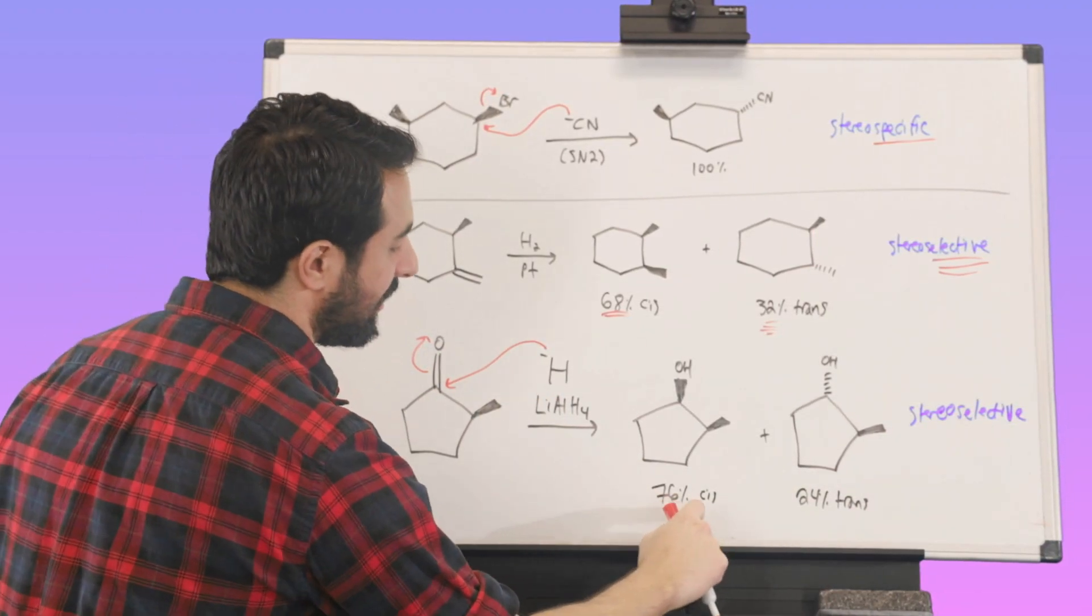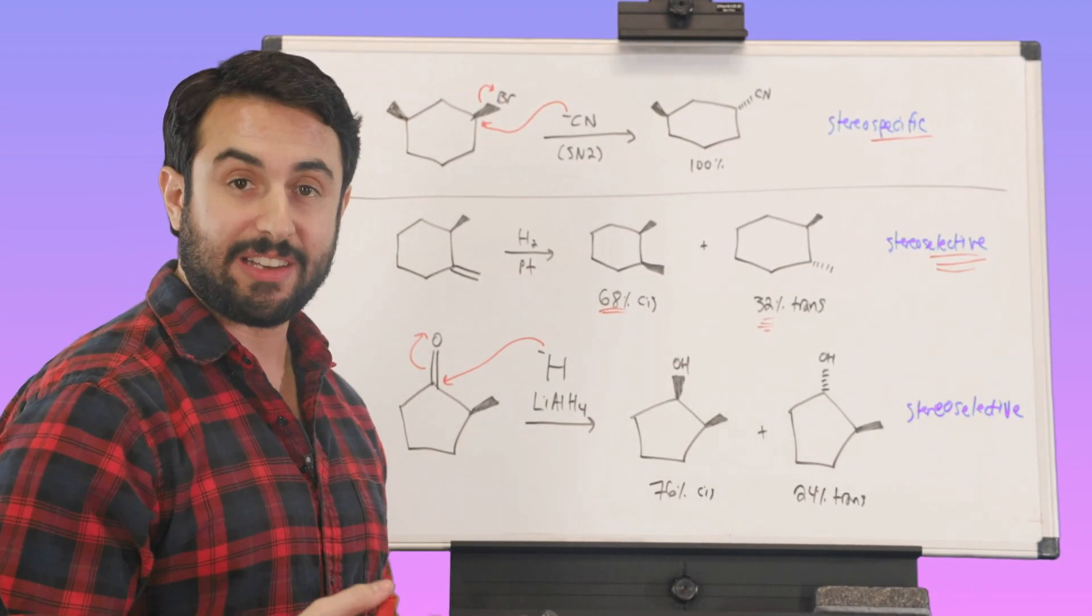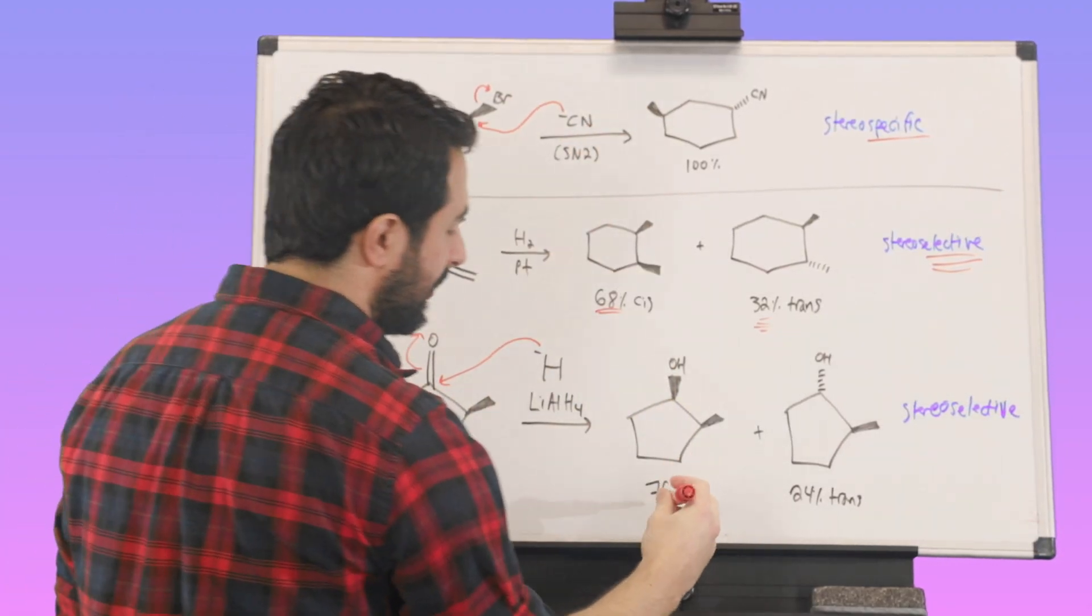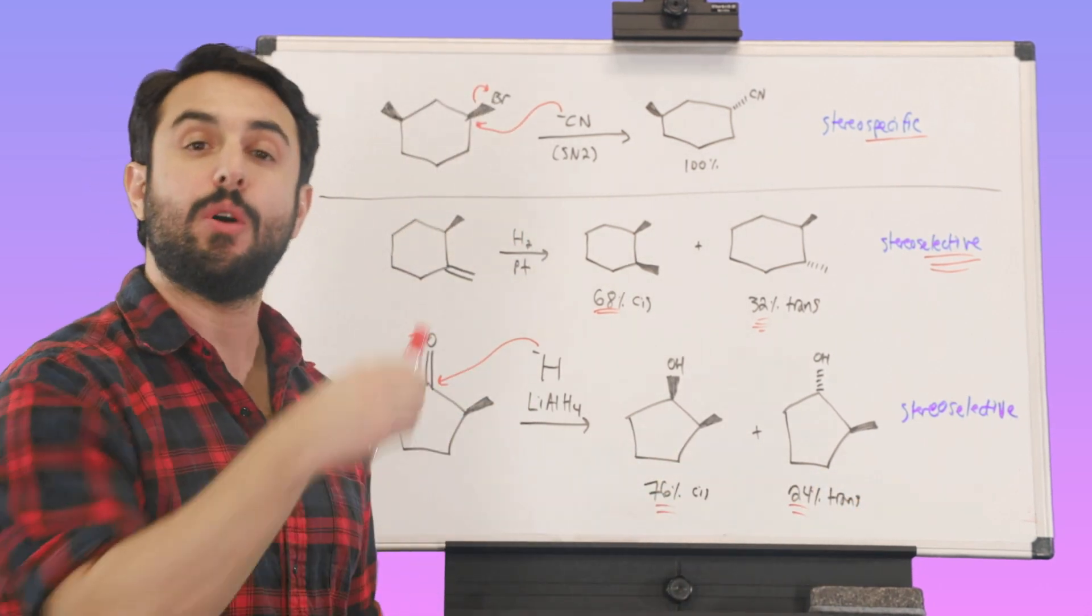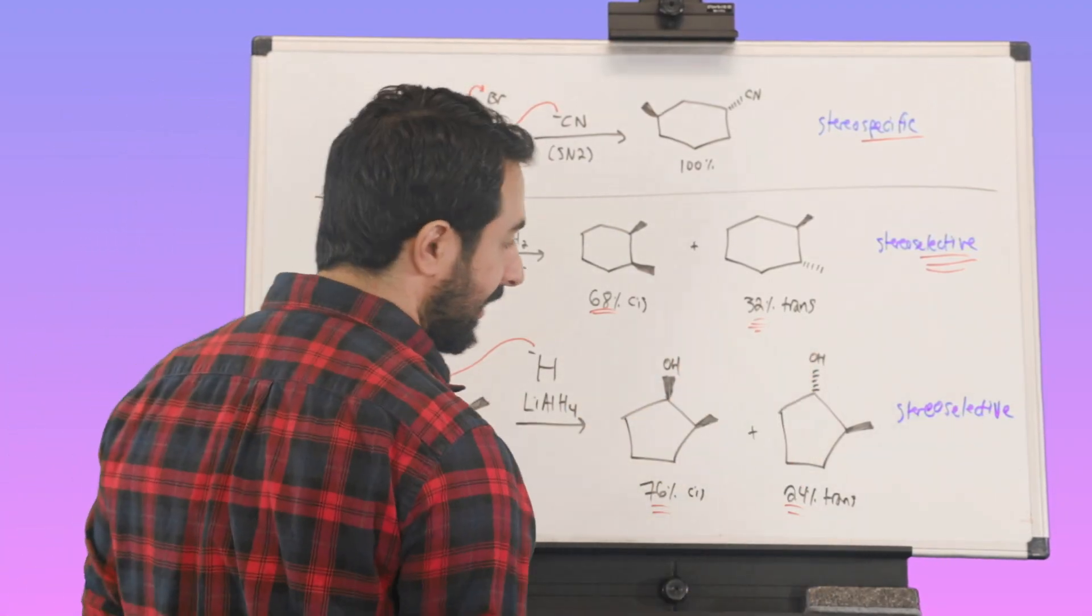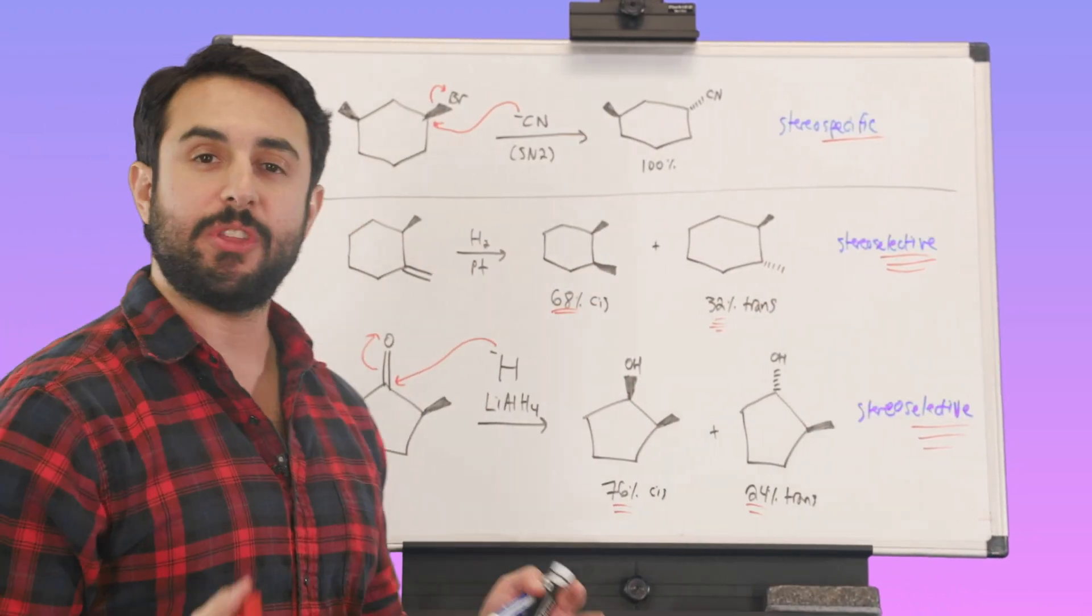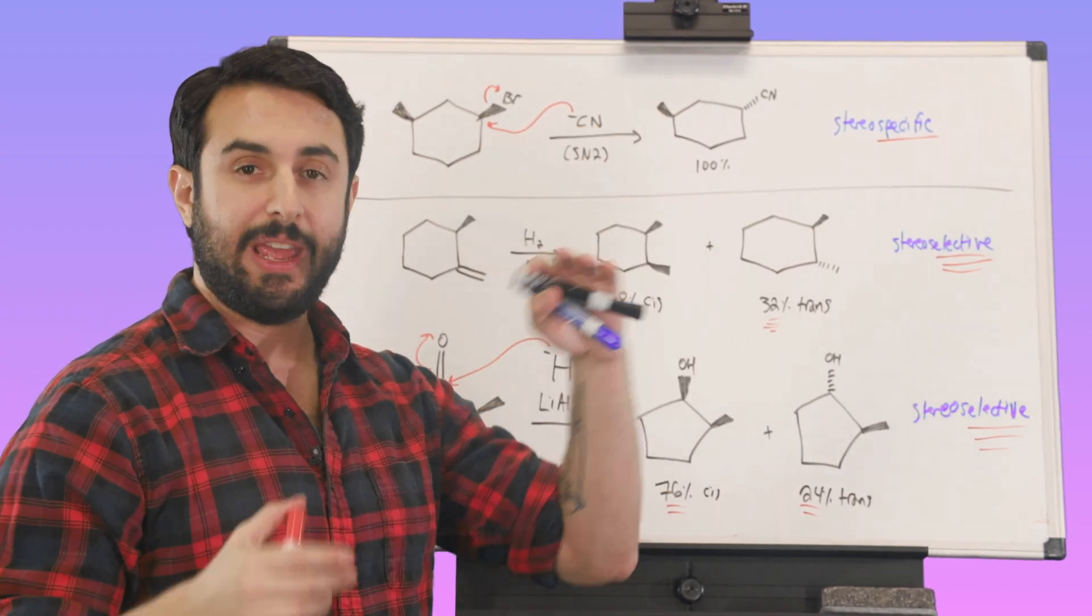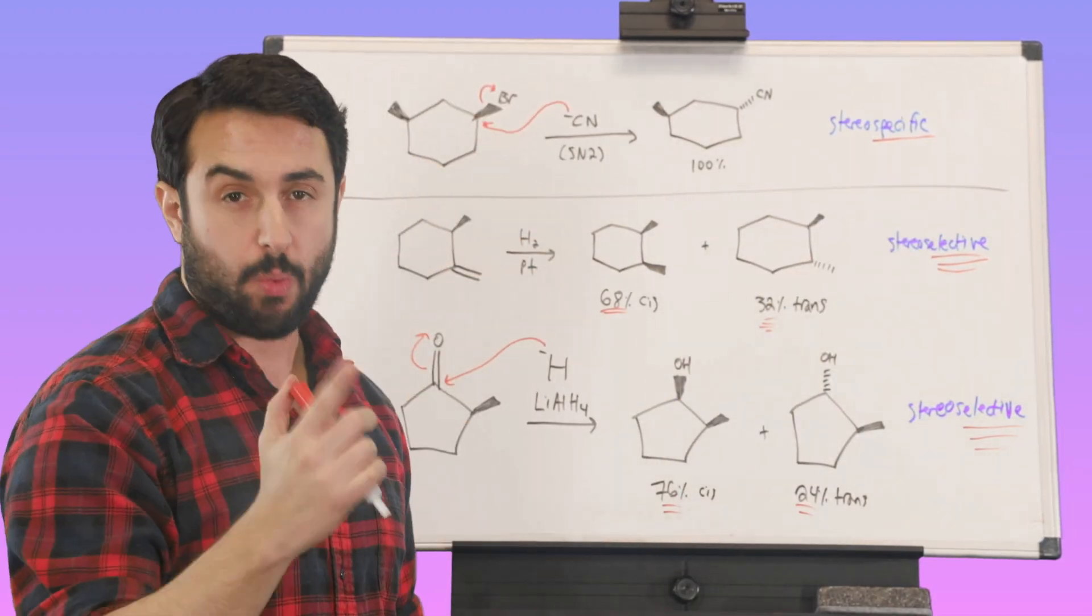And again, that is reflected in the product mixture. So we're going to get 76% cis on these groups because it's more energetically favorable or a lower activation energy for the hydride to attack from the back. And that would give us this versus 24% getting the trans where it will overcome this higher energy barrier and attack from the front, push that hydroxyl back and we get this. So again, it's stereoselectivity because we do get more than one product. It is just that one is favored over the other or the rest if there are multiple within the product mixture, which is different from stereospecificity where we get only one product.